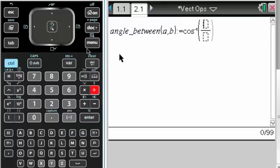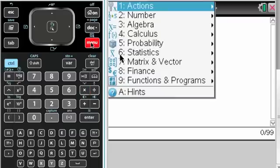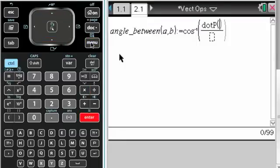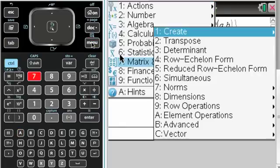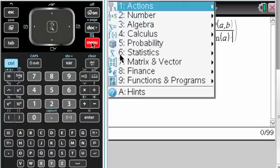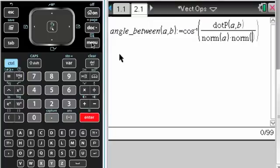Get a fraction. So it's going to be the dot product. Dot product of a and b over, and then it's the norms. So that's menu 7, 7, enter of a times the norm, menu 7, 7 of b.